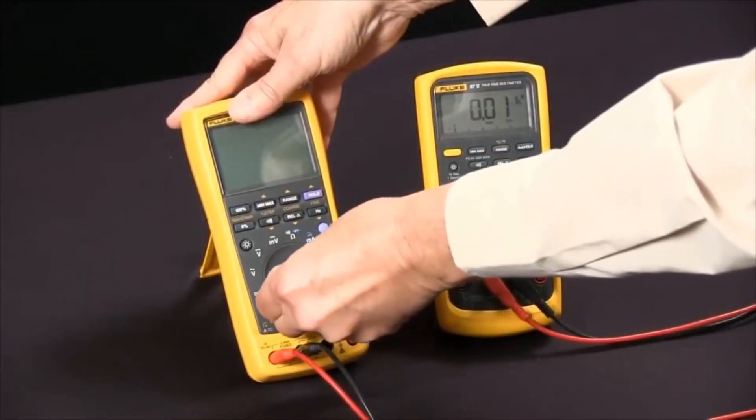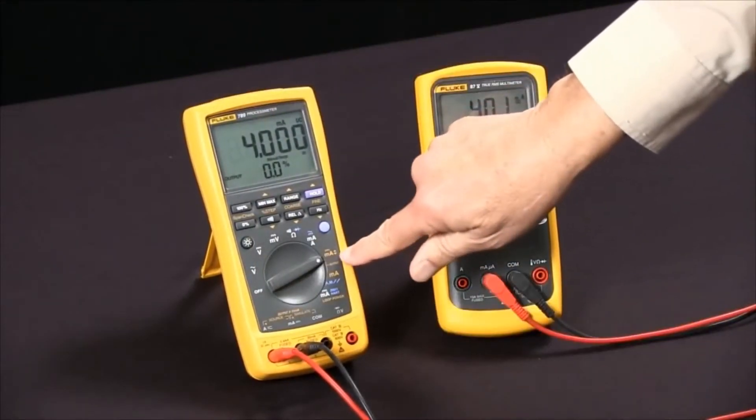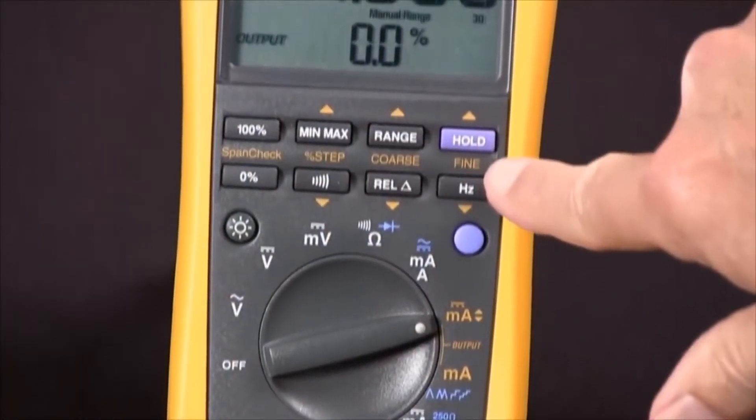Then we'll rotate the rotary knob over to the DC milliamp position. And from this point, we have several choices to control it.